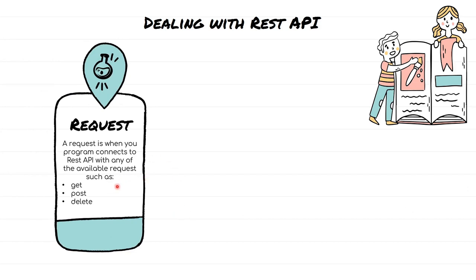In this case, we are going to use a Python program to make a request to REST API. Now whenever we are making a request, there can be different types of requests you perform, such as GET request, POST request, or DELETE request. There are many other requests as well, but here for the sake of simplicity, we are just considering these.